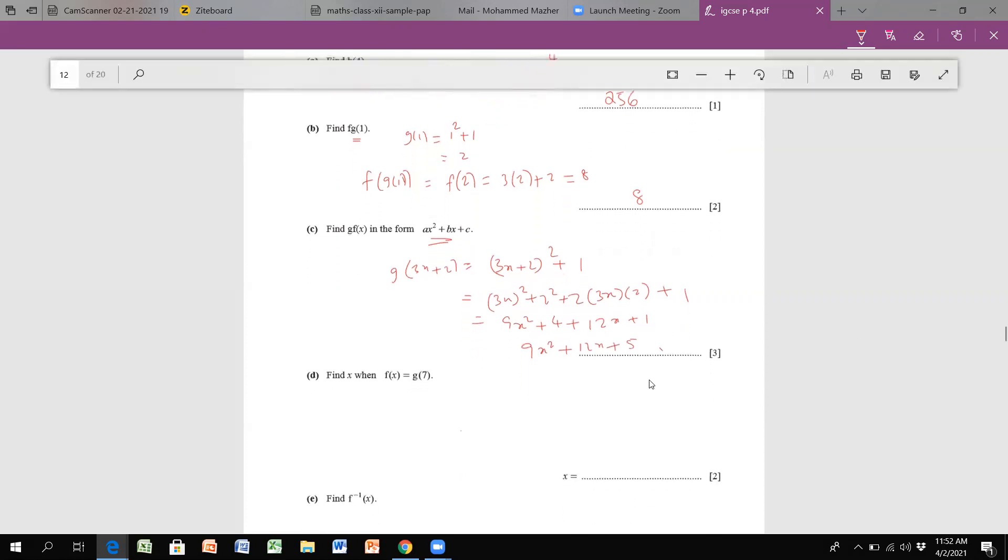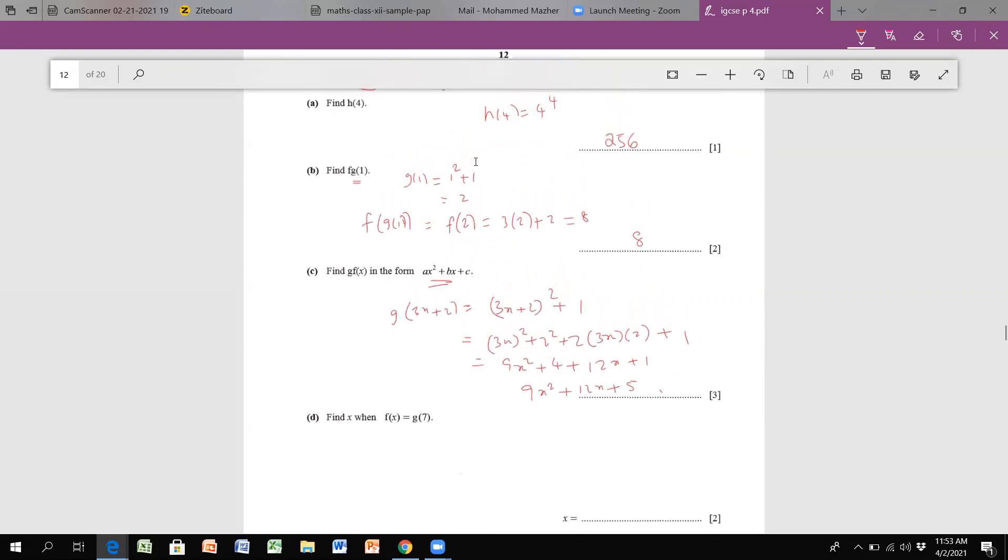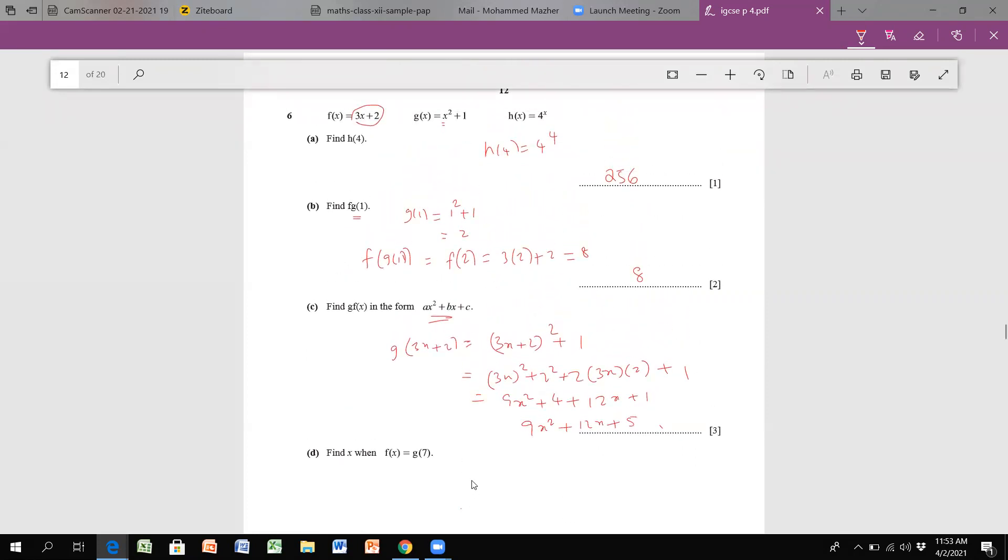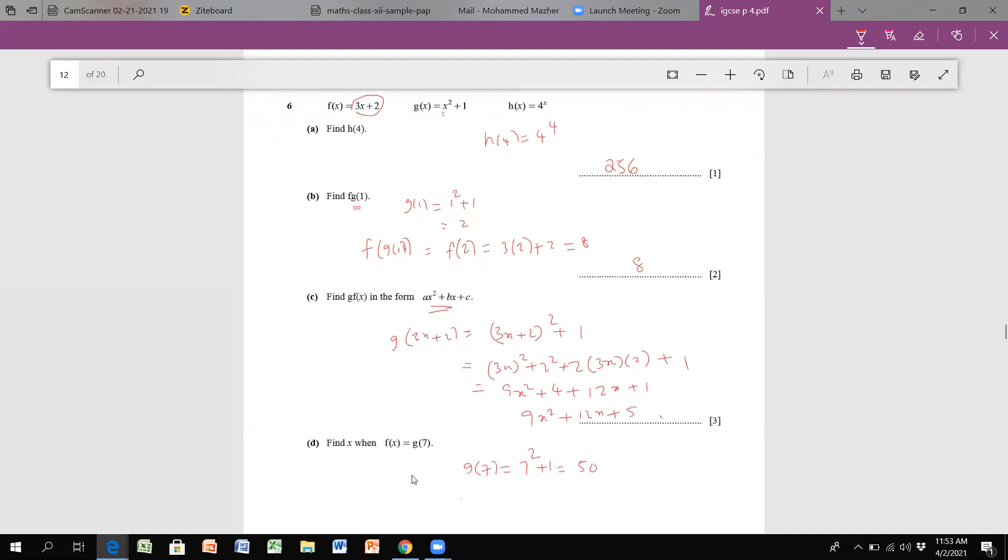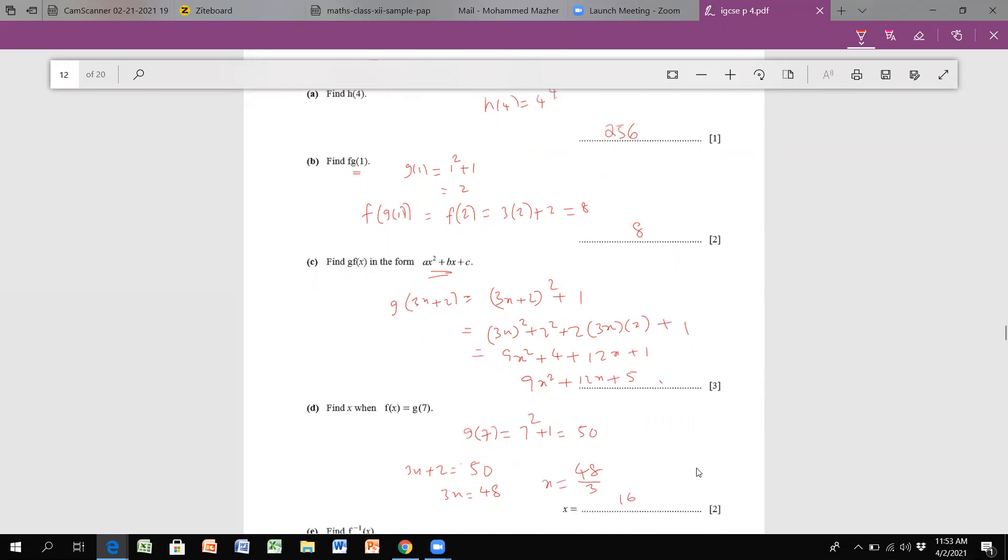Moving on to the next question, we need to work out x when f(x) equals g(7). So first get g(7) by substituting 7 in the g function. I'm going to get 7² plus 1, that is 49 plus 1, which is 50. f(x) I have 3x plus 2, so equate that: 3x + 2 = 50. I'll get my x value after subtracting 2 from both sides, that is 48. x equals 48 divided by 3, which gives me 16.